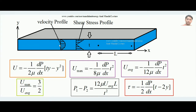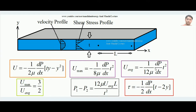Maximum velocity occurs at the centerline y = t/2: substituting gives ty − y² = t²/2 − t²/4 = t²/4, so u_max = −(1/8μ)(dp/dx)(t²). The average velocity is: u_avg = −(1/12μ)(dp/dx)(t²) — the only difference from u_max is the denominator changes from 8 to 12.